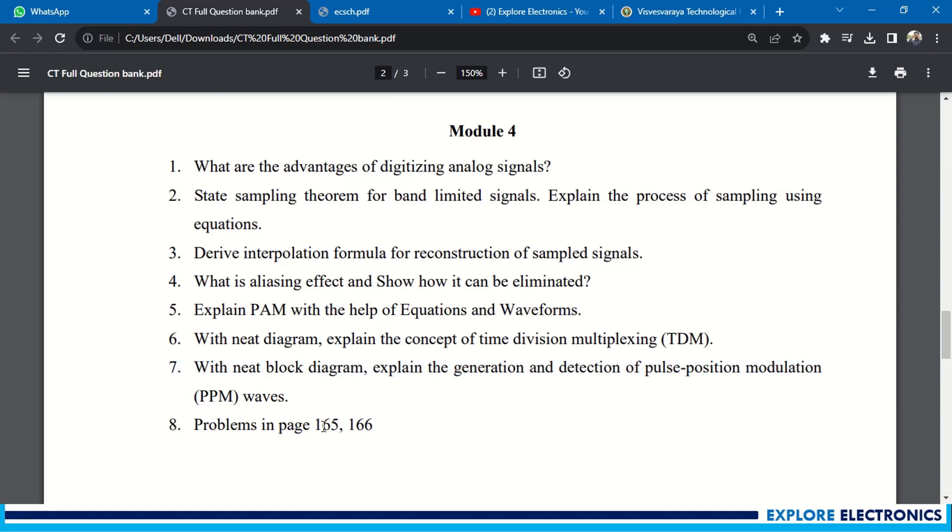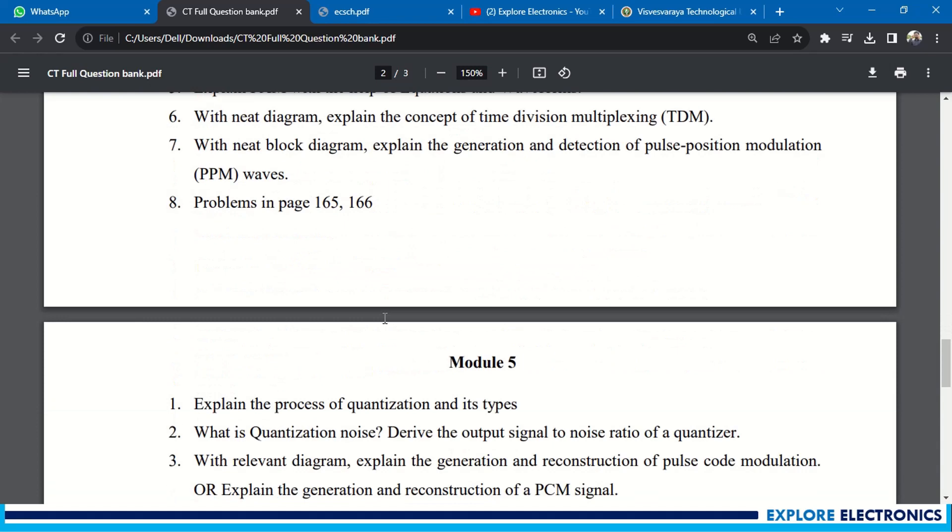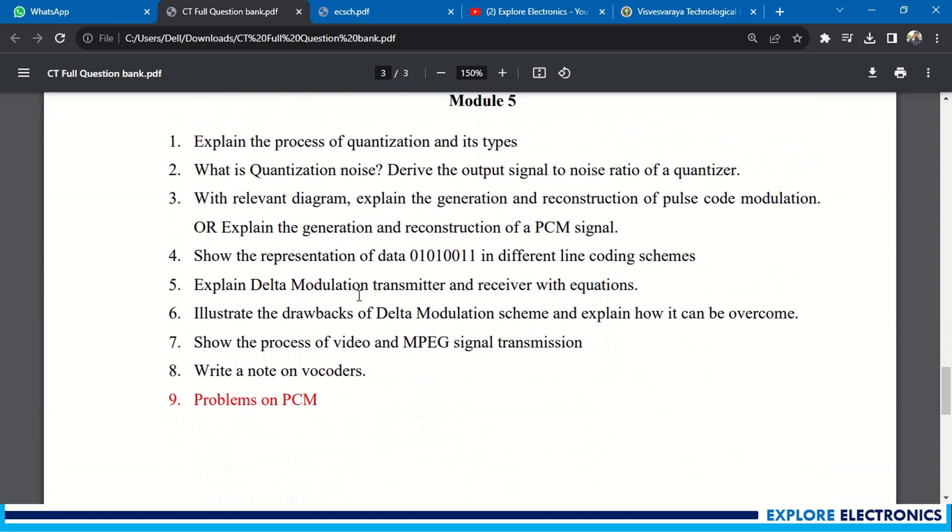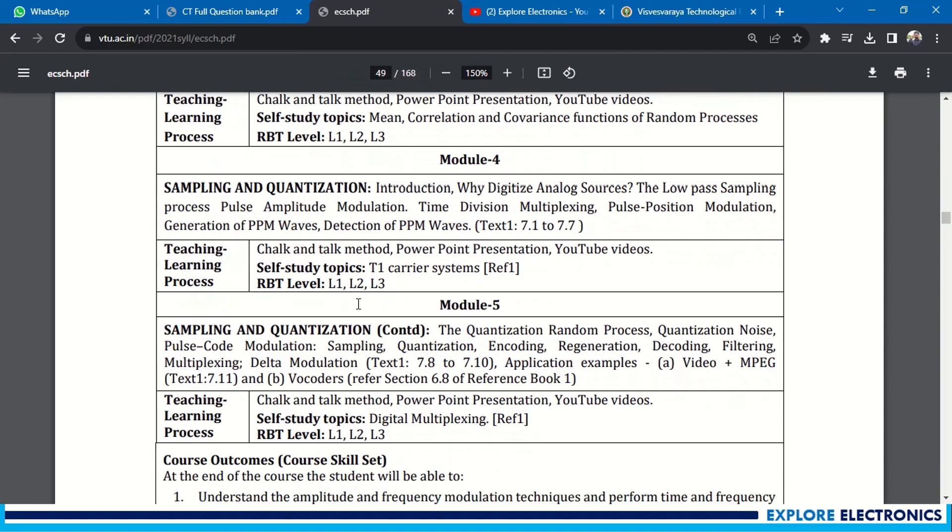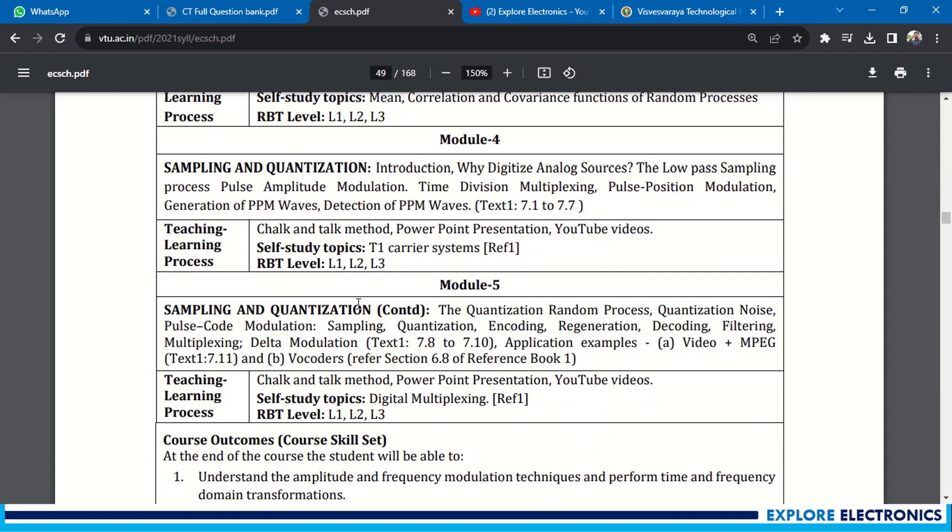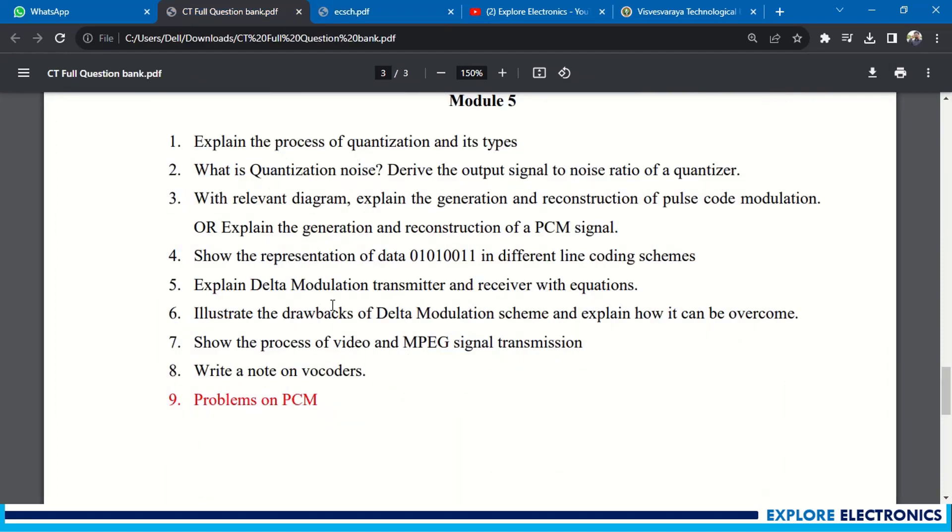Coming to Module 5: Module 5 is sampling and quantization continued with Module 4, it is continuation - encoding, decoding, filtering, multiplexing, demodulation and all. Here you can expect process of quantization and its types, quantization noise.